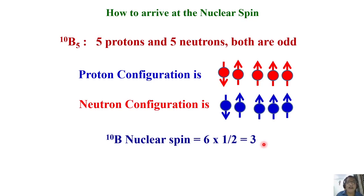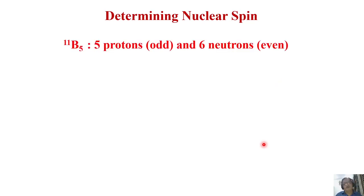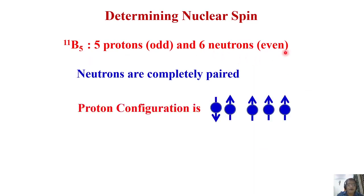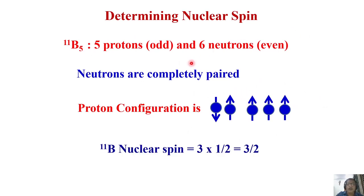For boron-11, the other isotope, there are five protons and six neutrons. The six neutrons are completely paired (even number), so we don't worry about them. The proton configuration is the same as before — two paired, three unpaired. So there are three unpaired protons. As a consequence, the nuclear spin of boron-11 is 3 × ½ = 3/2. So boron-10 has spin 3 and boron-11 has spin 3/2.